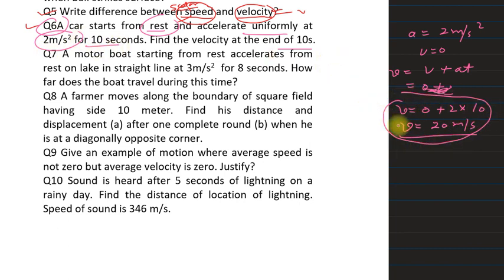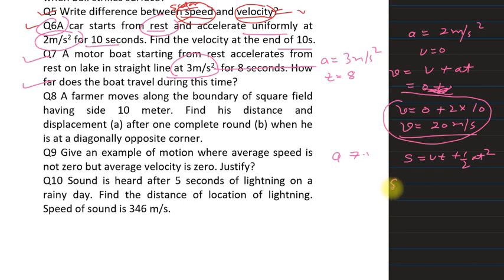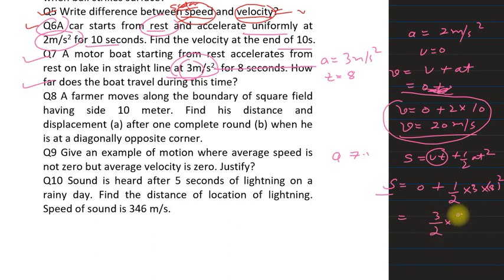Question 7: a motorboat starts from rest on a lake in a straight line with acceleration 3 m/s² for 8 seconds. How far does the boat travel? Using s = ut + ½at²: u = 0, so s = ½ × 3 × 64 = 3/2 × 64 = 96 meters. The distance covered by the boat is 96 meters.